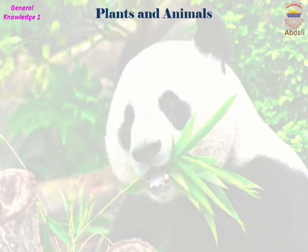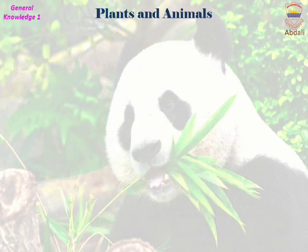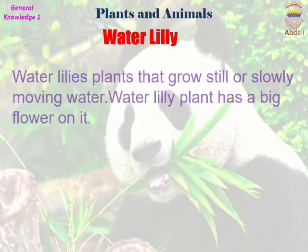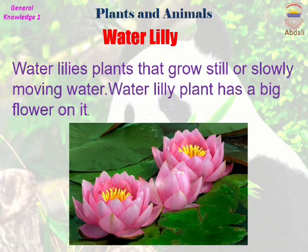There are so many small flowers on a mango tree, and these flowers grow near to each other. Water lilies are plants that grow in still or slowly moving water. They like ponds, streams, and the edges of lakes in tropical and mild areas.